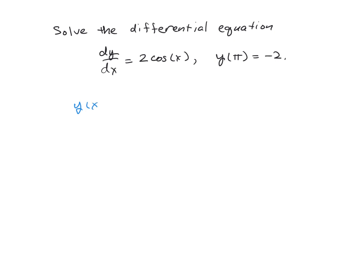So y of x is going to be the integral of 2 times the cosine of x with respect to x. And again, being in the very beginning stages of finding antiderivatives or indefinite integrals, we just have the power rule and our basic properties of just the derivatives written in reverse.